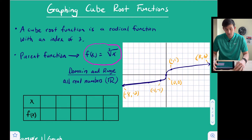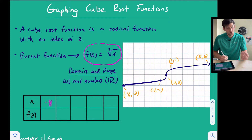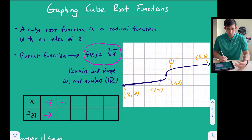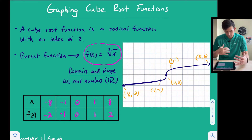That's where domain and range differ: with a square root function, the domain and range did not include negatives, but for cube root functions the domain and range include all real numbers. To fill out our XY table, we use: x = negative 8 (cube root is negative 2), x = negative 1 (cube root is negative 1), x = 0 (cube root is 0), x = 1 (cube root is 1), and x = 8 (cube root is 2).